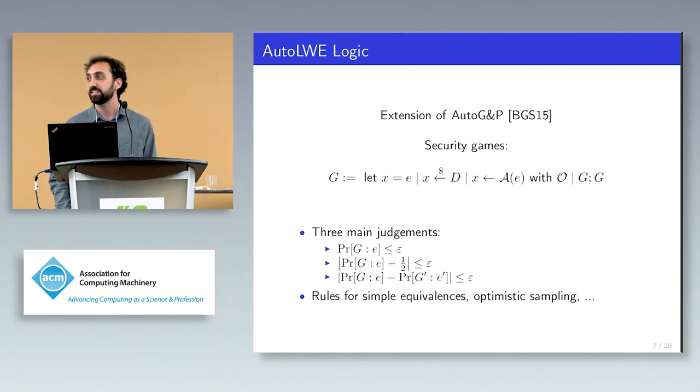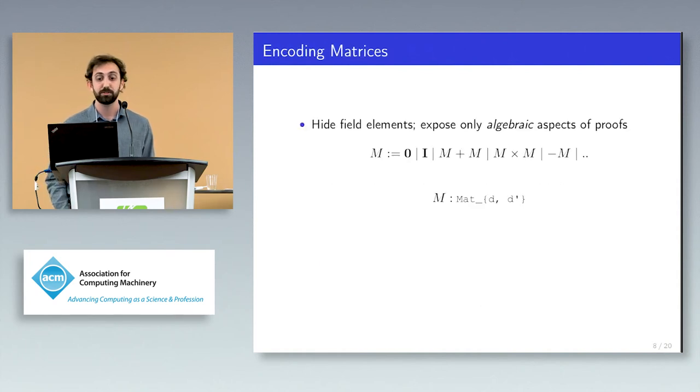Now that I've told you about the core logic, I can tell you about how matrices are encoded in the system. We model matrices abstractly in a manner close to how they are used in real security proofs. The only way to create matrices in our system is through uninterpreted functions, uniform samplings, and the grammar we describe here. The arithmetic operations are standard and correspond to things like zero identity matrix, matrix addition, multiplication, and negation. We additionally have a typing judgment, which says that M is a matrix of dimension D by D prime. All of the arithmetic operations are then typed in the obvious way.